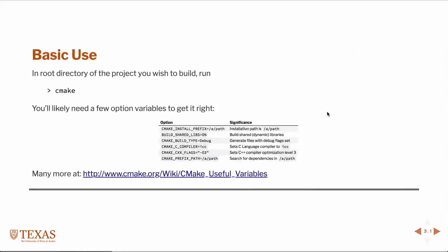The first thing we're talking about is how you would use CMake to build a larger project. When I say build, I mean compiling individual source code files and linking them together to make libraries or applications. In the root of a project directory, the simplest way to run CMake is just to type cmake. The set of instructions would be in files called CMakeLists.txt, and it would generate the makefiles.